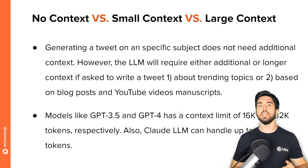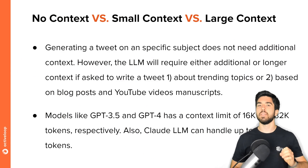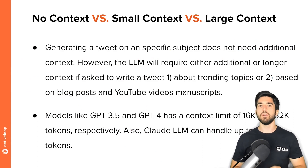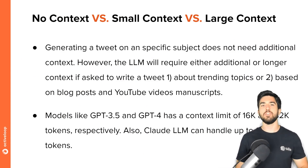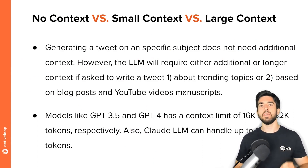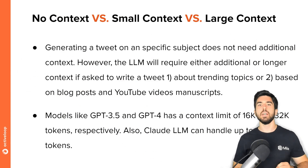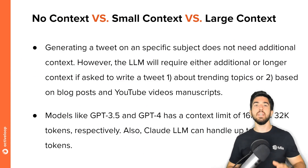If we created a podcast episode one hour long, we'd have to include its whole transcript inside the prompt, which could be several tens of thousands of tokens, exceeding the context size of many recent LLMs. For reference, OpenAI recently released a GPT-3.5 model with a context size of 16,000 tokens. GPT-4 manages up to 32,000 tokens, and Claude from Anthropic manages up to 100,000 tokens. If we wanted to use an LLM to help refactor a large GitHub repository, we may need even more than that.